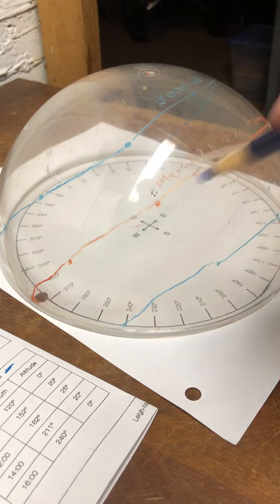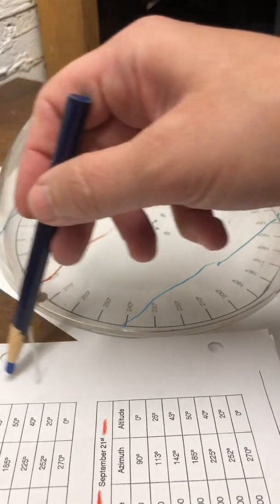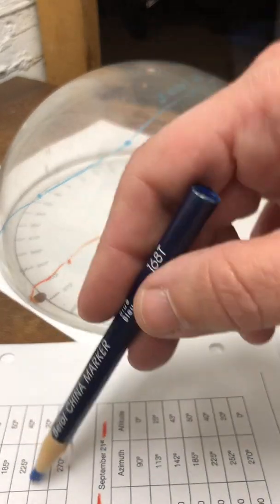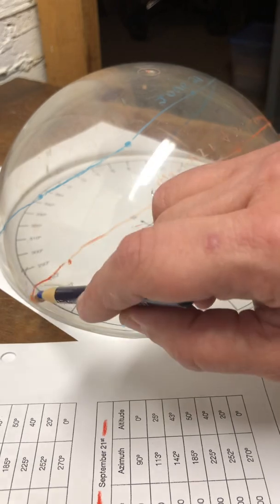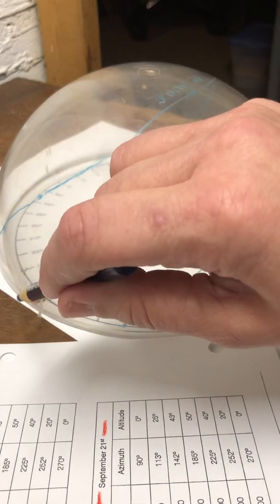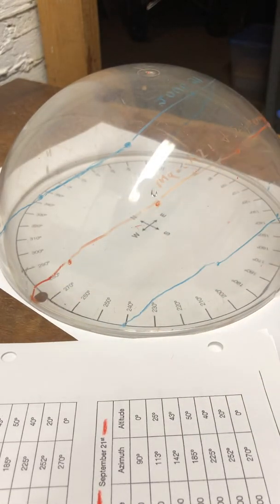March and September wind up being the same. In fact, if you look at the numbers, they're exactly the same altitude, exactly the same azimuth. And that's because March and September both rise in the east, and the sun sets exactly in the west for both March and September. So it's the same sun's path.